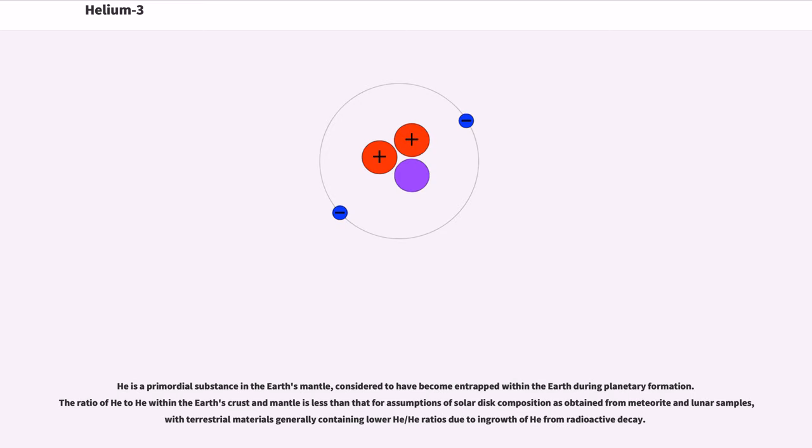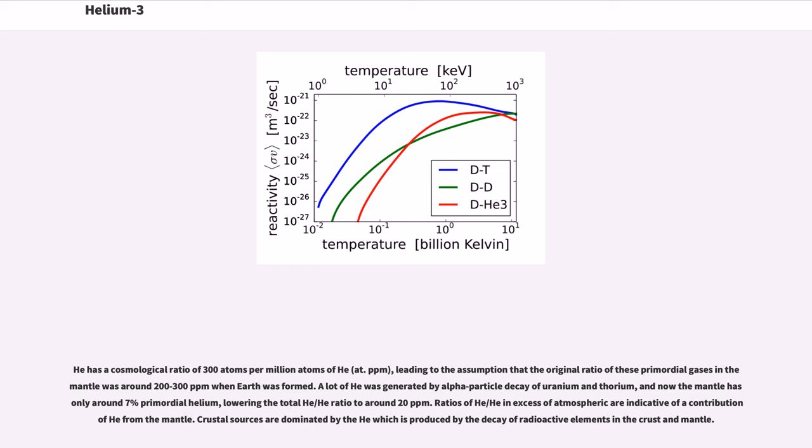He3 is a primordial substance in the Earth's mantle, considered to have become entrapped within the Earth during planetary formation. The ratio of He3 to He4 within the Earth's crust and mantle is less than that for assumptions of solar disk composition as obtained from meteorite and lunar samples, with terrestrial materials generally containing lower He3/He4 ratios due to in-growth of He4 from radioactive decay. He3 has a cosmological ratio of 300 atoms per million atoms of He4, leading to the assumption that the original ratio of these primordial gases in the mantle was around 200 to 300 parts per million when Earth was formed. A lot of He4 was generated by alpha-particle decay of uranium and thorium, and now the mantle has only around 7% primordial helium, lowering the total He3/He4 ratio to around 20 parts per million. Ratios of He3/He4 in excess of atmospheric are indicative of the contribution of He3 from the mantle. Crustal sources are dominated by the He4 which is produced by the decay of radioactive elements in the crust and mantle.